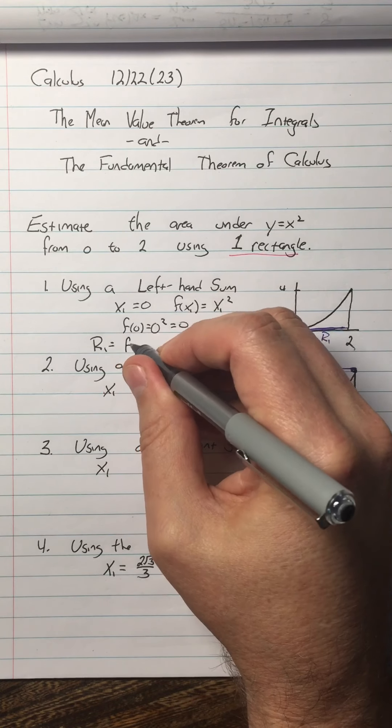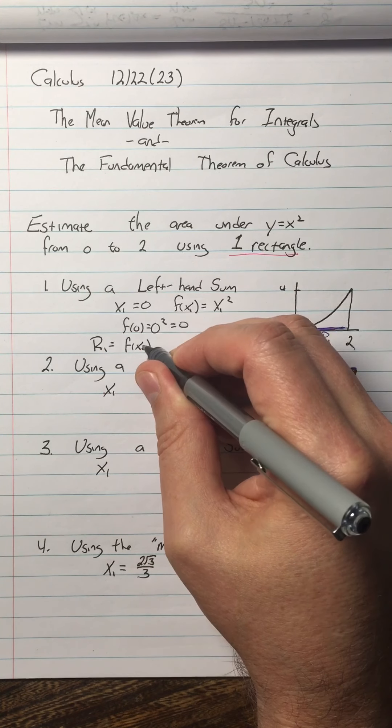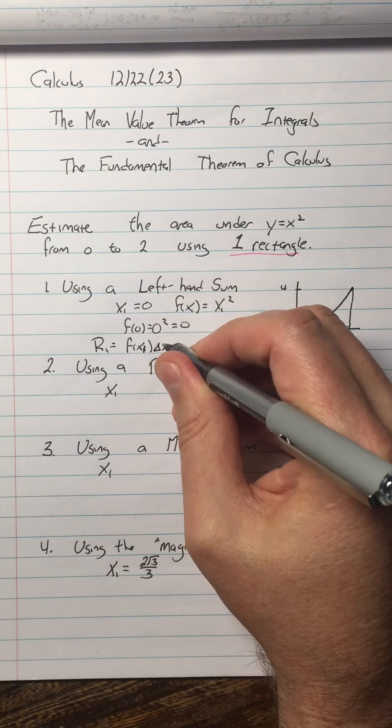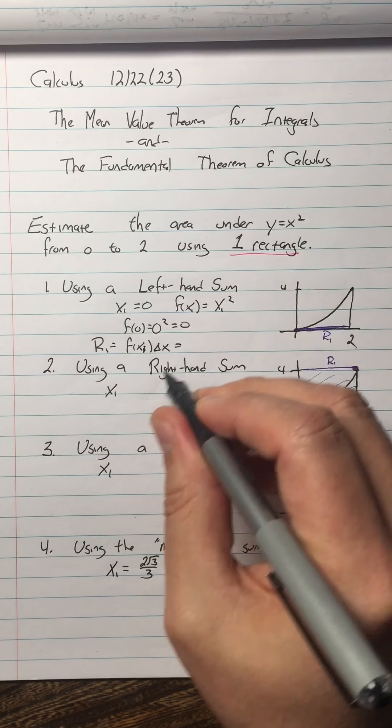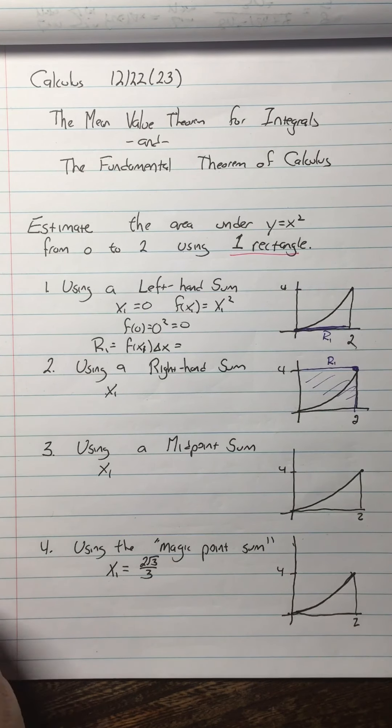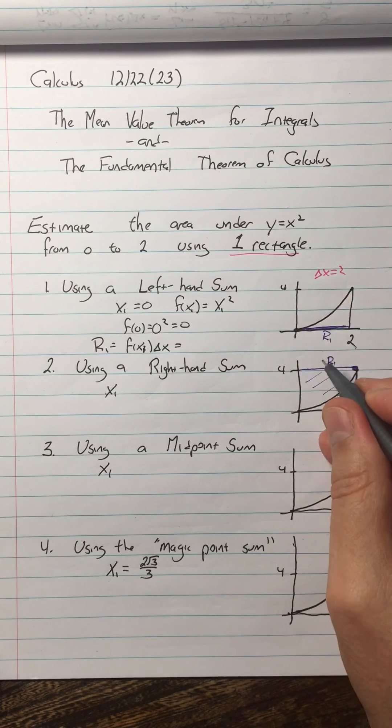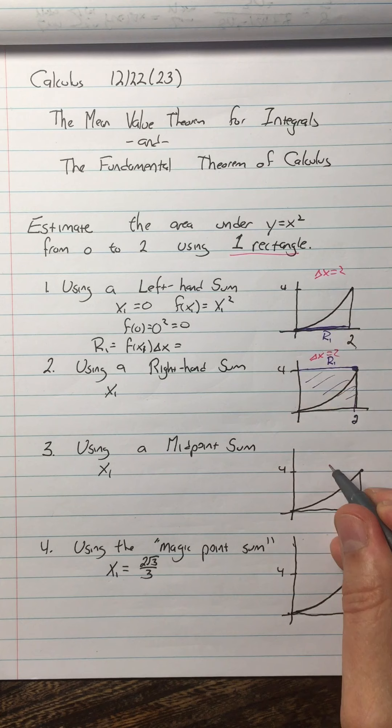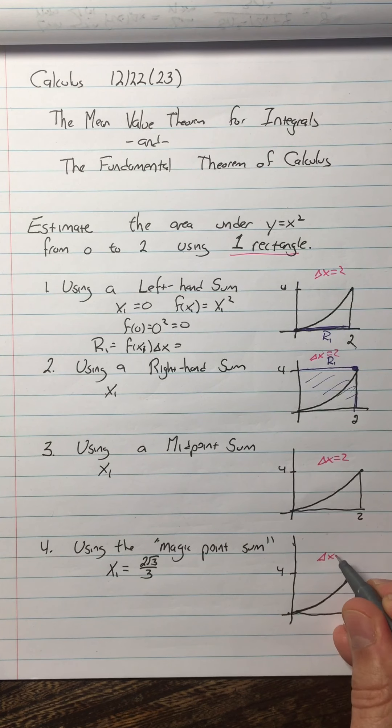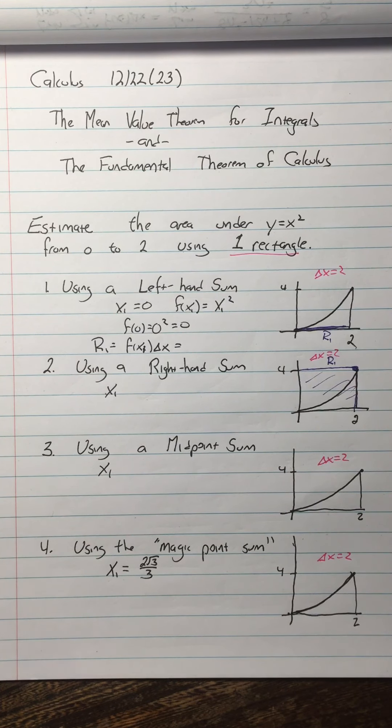So that means that R1 equals, and what I want to keep coming back to is f of x sub i, which in this case is just x sub 1, delta x, right? So what's the delta x in every case? In every case here, the delta x is 2. So we only have one rectangle. The delta x is 2 in every case because it's the whole bottom of the area.